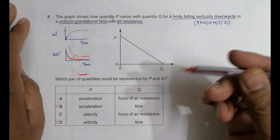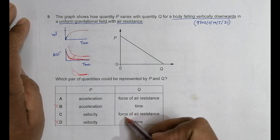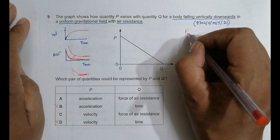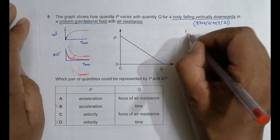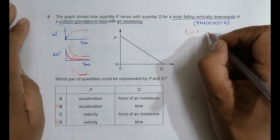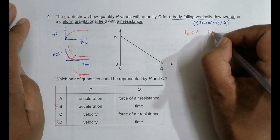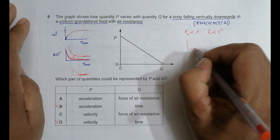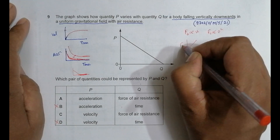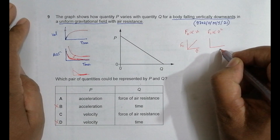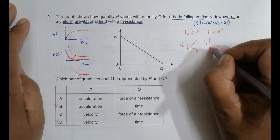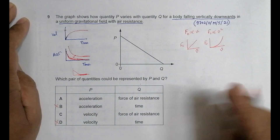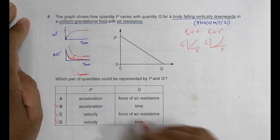Next is velocity versus opposing force. We have many types of opposing forces: in some cases the opposing force F_o is proportional to v, giving a straight line; in other cases it is proportional to v², giving a parabolic curve. So a graph of F_o against v would not be linear in general. This means choice C is also incorrect.